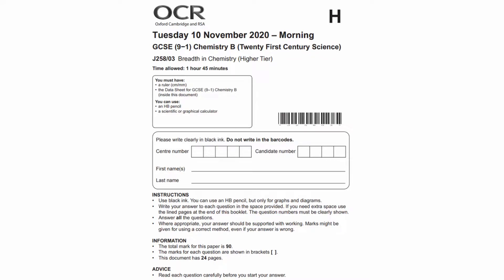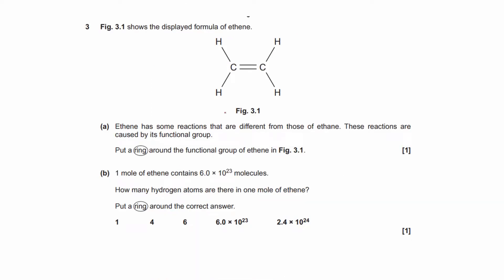So this is the GCSE OCR 21st century chemistry paper, the higher tier. All the details you need to know are on the front here. We are looking at question 3.